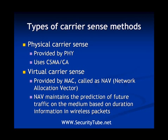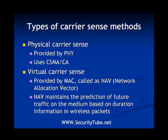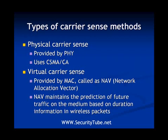Virtual carrier sense is provided by the MAC, or Media Access Control, layer. It is also called NAV, or Network Allocation Vector. NAV maintains a prediction of future traffic on the medium based on the duration field in wireless packets. Every wireless packet has a Duration/ID field in the MAC header, and the value in this field corresponds to the NAV value. For that duration, all nodes except the intended recipient cannot access the media.